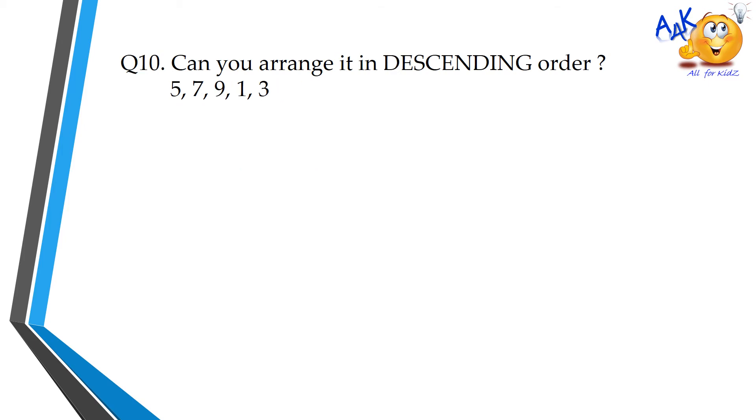Q10. Can you arrange it in descending order? 5, 7, 9, 1, 3. The descending order of the above numbers is 9, 7, 5, 3, 1.